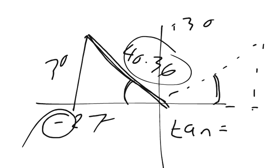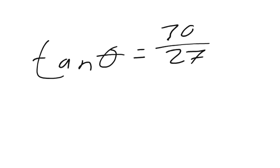Tangent equals opposite over adjacent. And so, the tangent theta equals 30 over 27. So tangent theta equals 1.111.